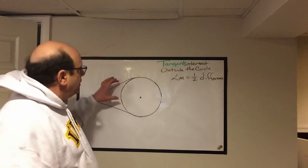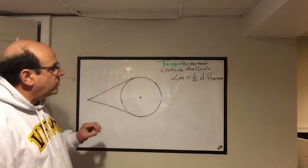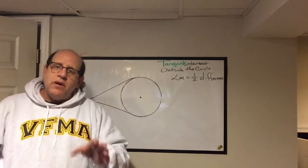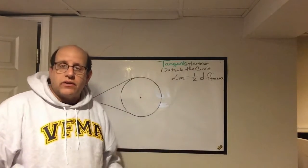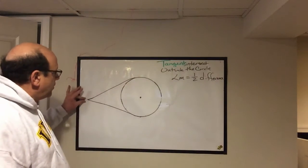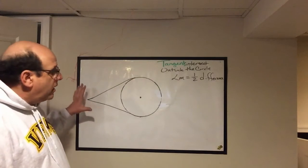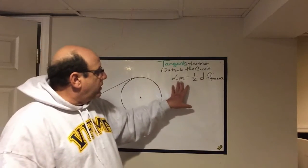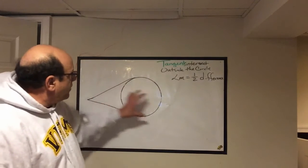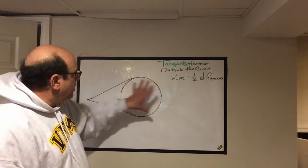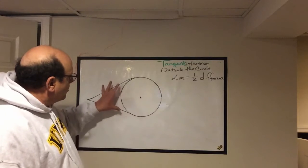If tangents intersect outside the circle, it's just the same as when secants intersect outside the circle. So we have two tangents, they intersect out here, and we're going to use the same formula. The measure of this angle right here is one half the difference between this major arc and this minor arc.